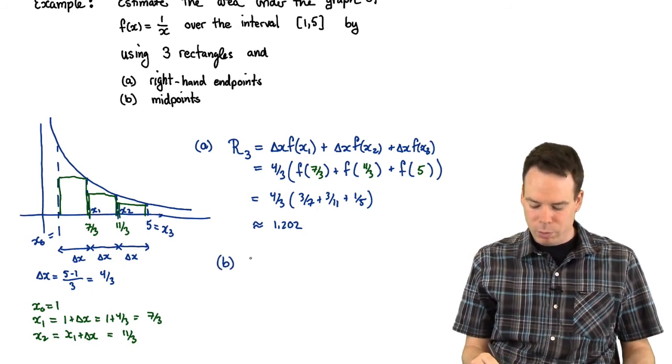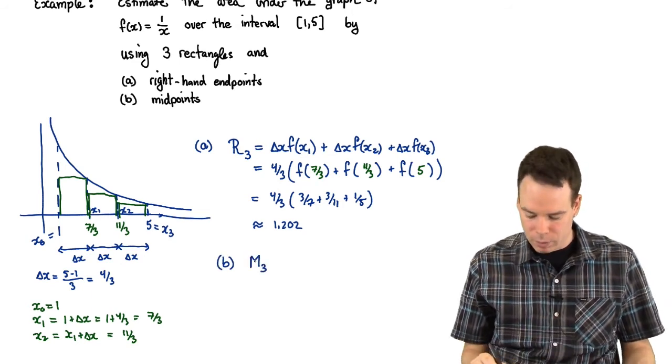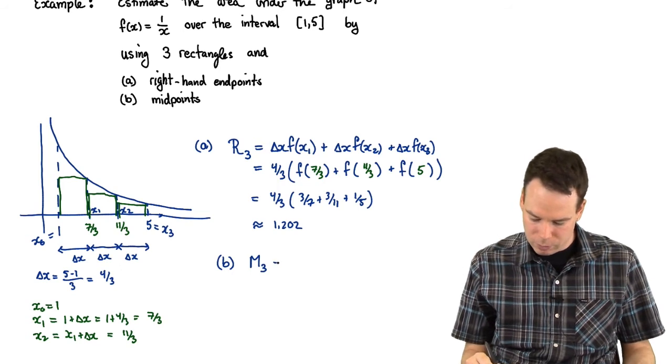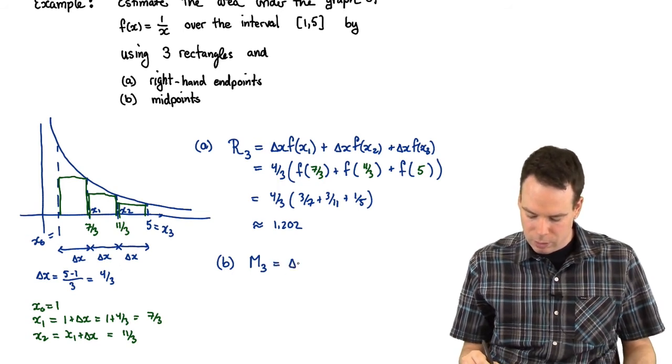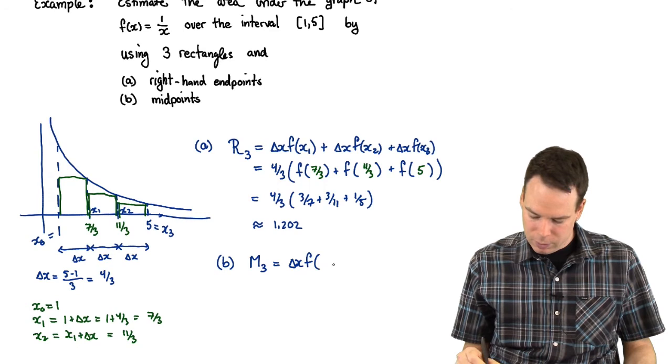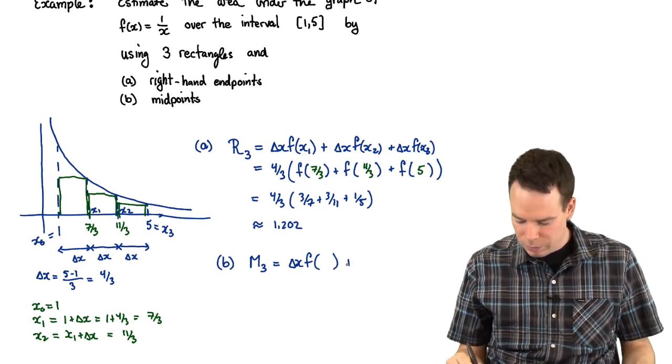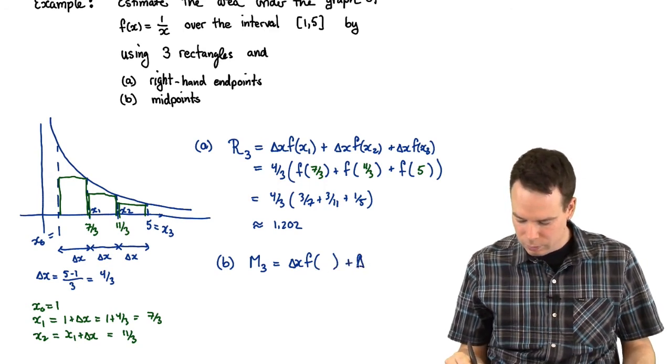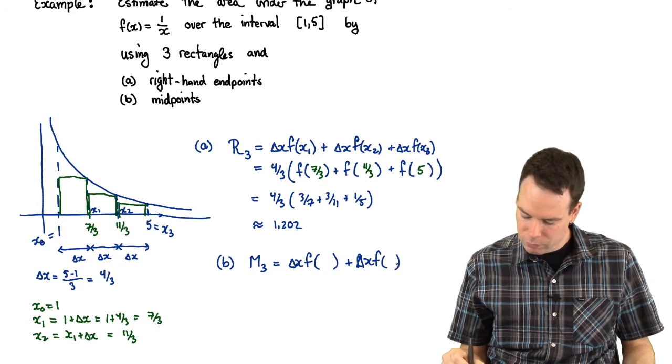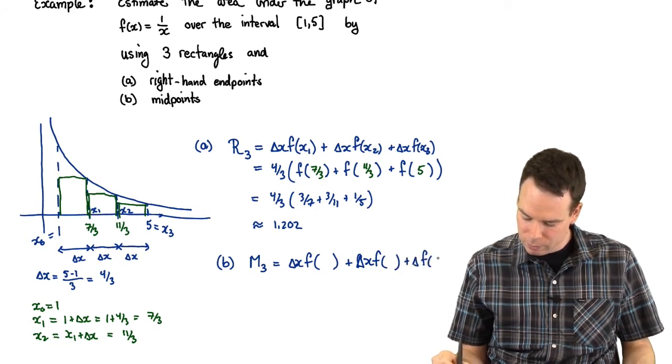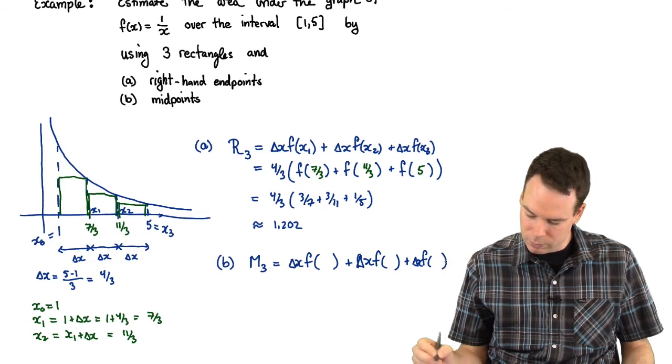What about our midpoints? Well, this would be M sub 3. M for midpoint, 3 rectangles, 3 subintervals. Delta x times f of, we have to do this for delta x times f of, for each of the three rectangles. Delta x and f of.